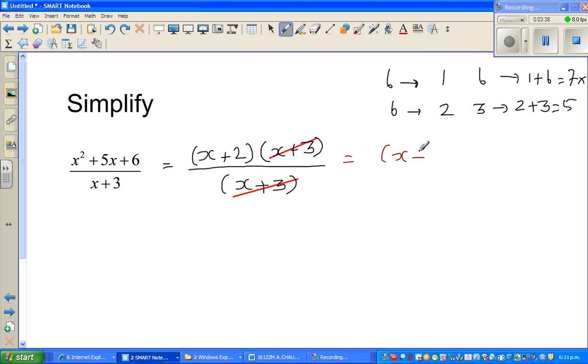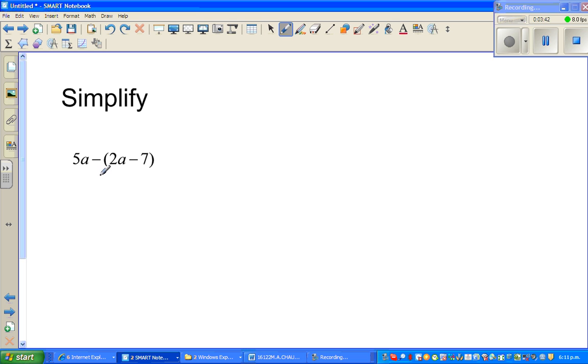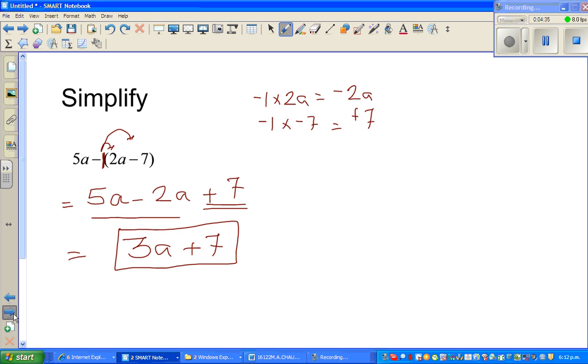Okay, one more question: 5a minus (2a minus 7). This is a pretty easy question. Here again, you have to be very careful with this minus—you're distributing this negative one. You're multiplying with negative one. So negative one times 2a is negative 2a, and then you distribute this to the negative 7. Negative one times negative seven is plus 7. So this will be 5a minus 2a plus 7. This is where most of you can go wrong if you're not careful. You can simplify this to 3a plus 7, and that's the answer.